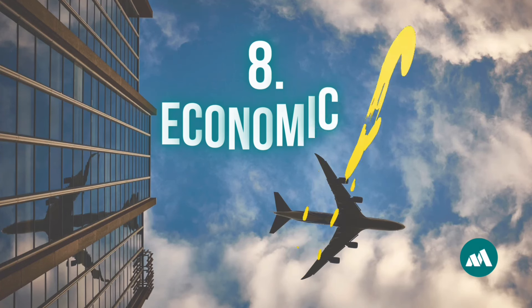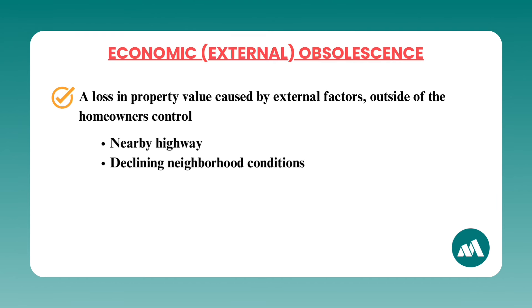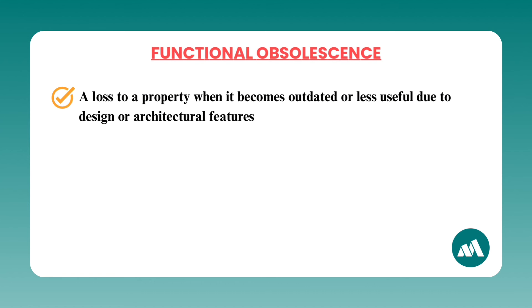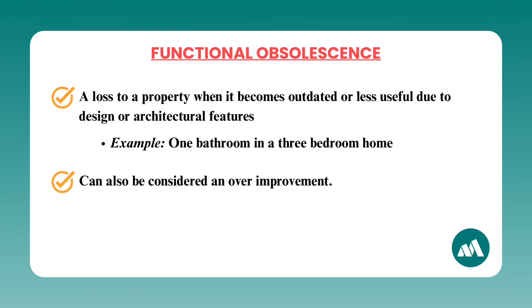Number eight: economic and functional obsolescence. Economic obsolescence, also called external obsolescence, refers to a loss in property value caused by external factors outside of the homeowner's control, such as a nearby highway or declining neighborhood conditions. Functional obsolescence occurs when a property becomes outdated or less useful due to design or architectural features — like having only one bathroom in a three-bedroom home. Functional obsolescence can also be considered an over-improvement to the home, so look out for that on your exam. Both forms can affect the marketability and valuation of a property.